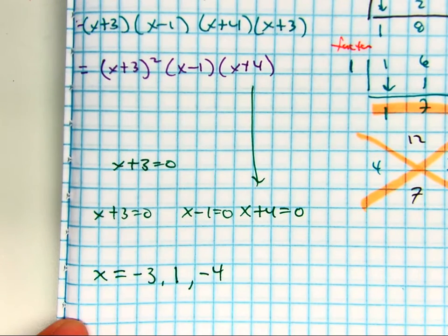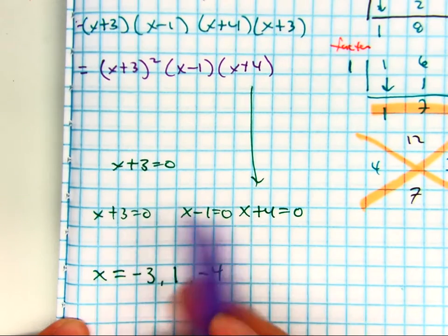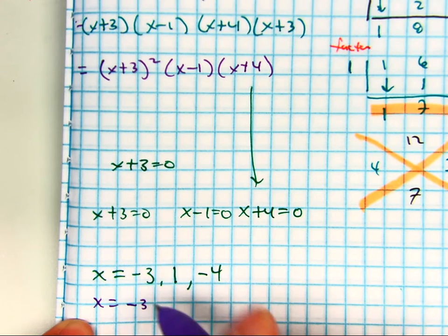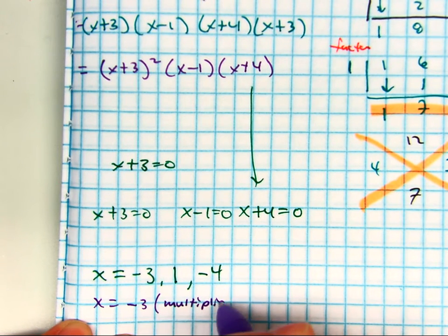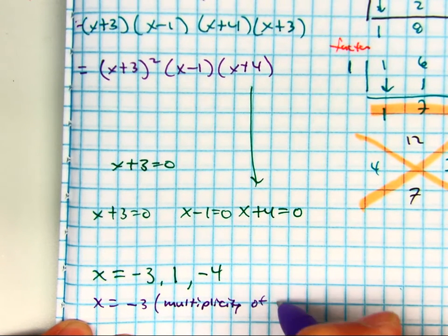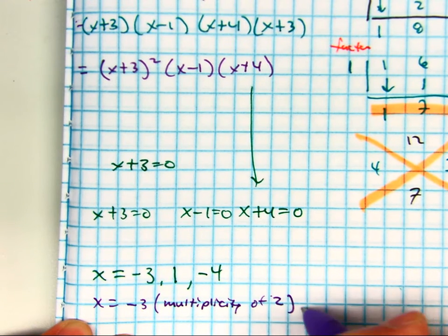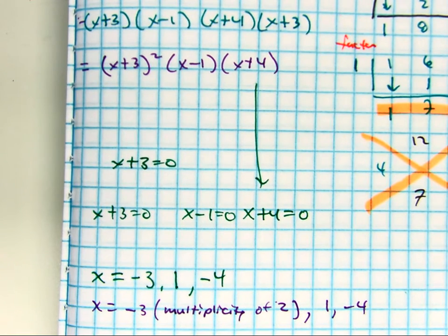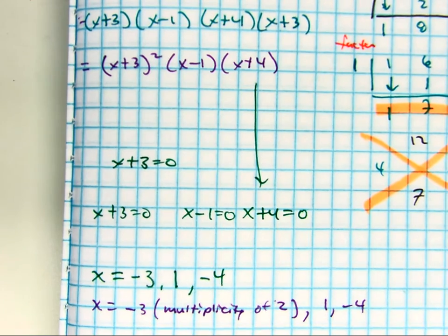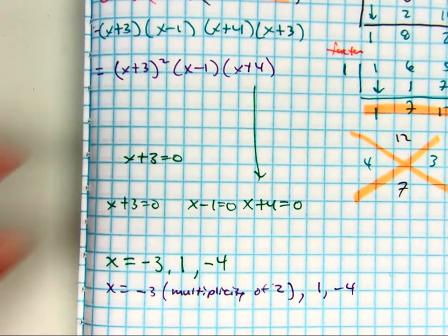Now how many times do we have x equals negative 3? Twice. So we call that a multiplicity of 2. 1 and negative 4. And this is my answer. These are my zeros of my polynomial function.